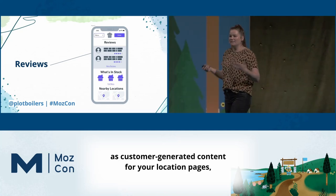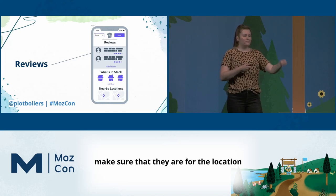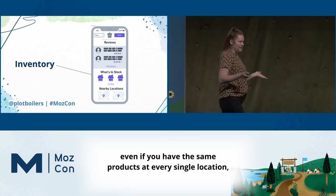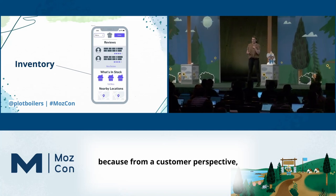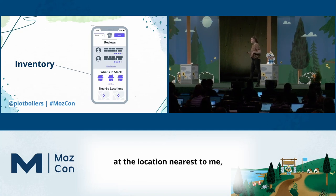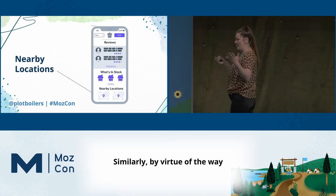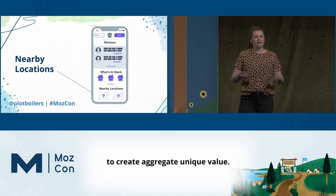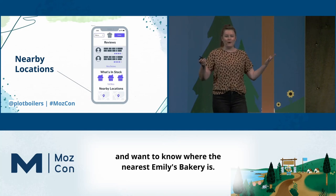You can think about reviews as customer-generated content for your location pages. When you're adding reviews to your local landing pages, make sure they are for the specific location you're talking about. When it comes to inventory, even if you have the same products at every location, I recommend adding them to your location pages because from a customer perspective, I only care if red velvet cupcakes are in stock at the location nearest to me — so it has an element of unique value. Similarly, nearby locations is another opportunity to create aggregate unique value, and it's also a great way to improve customer experience.